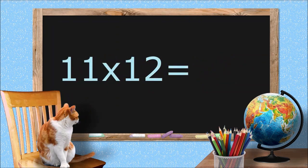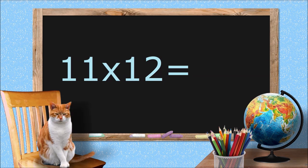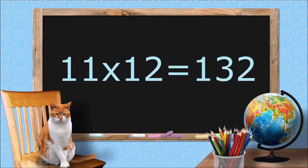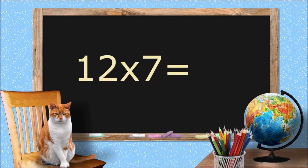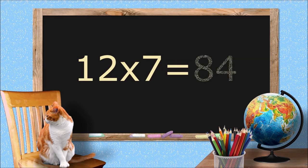132. 12 times 12 equals 132. 12 times 7 equals 84.